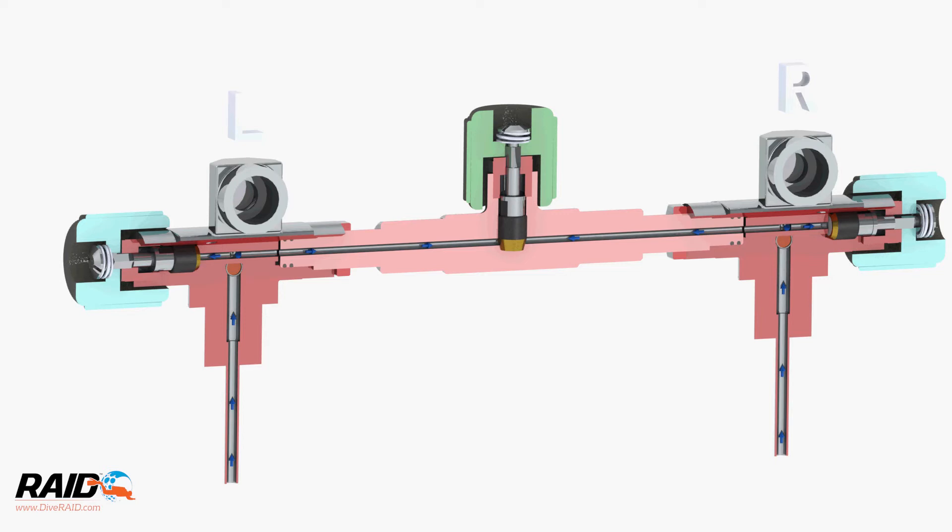With the isolation valve, shown in green, closed, let's open the left valve by turning the hand wheel anti-clockwise. You'll see the gas flows through and out of the left post.